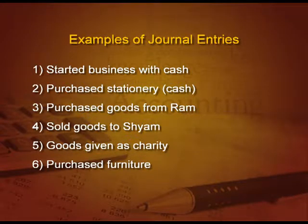Next: purchased furniture. We are purchasing, but we are purchasing an asset, not goods. So what is coming in? Asset. Asset is debit. The entry is: furniture account debit. What is credit? Cash account credit, because if nothing is mentioned, it is always cash. So in the particulars column we write: furniture account debit, To cash. 'To' is prefixed with the credit entry.